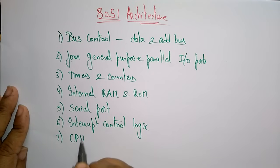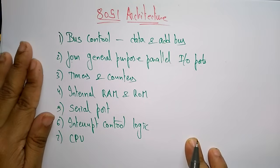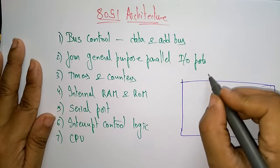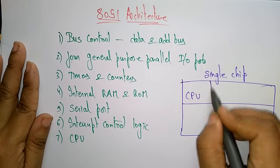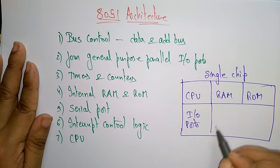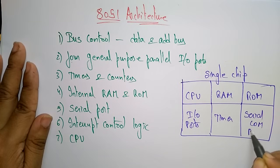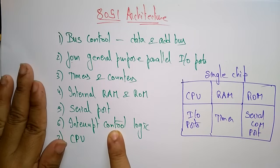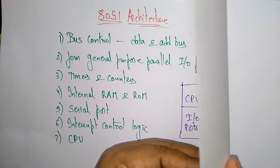The main part is the CPU — central processing unit. These are the major components present in the 8051 microcontroller. This 8051 is a single chip microcontroller. This single chip consists of a central processing unit, RAM, ROM (memory units), input/output ports, timers, and a serial communication port — all integrated within a single chip.